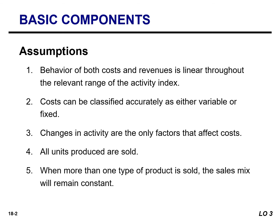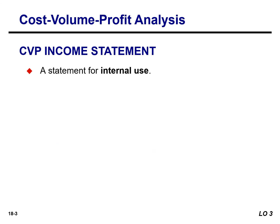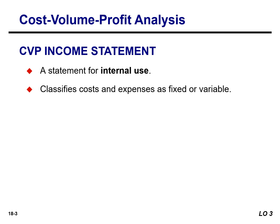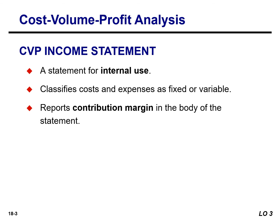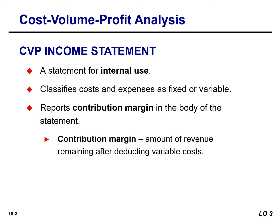The following assumptions underline CVP analysis. The only one I want to point out is that all units produced are sold — that is the assumption we are making. CVP analysis is important for decision-making, and this statement classifies cost as variable or fixed and reports a contribution margin. Contribution margin is the amount of revenue remaining after deducting variable cost, often stated as both a total amount and on a per unit basis.